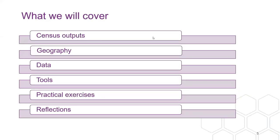What I'm going to cover is, first of all, the census outputs — I'll start with the obvious ones that are available, and as we move on there are some nuances to what's coming. I'll explain the geographies that are available, have a look at the kind of data we're going to get, talk a little bit about tools we might use to understand it, then move on to practical exercises, and finally some reflections on how you found that material.